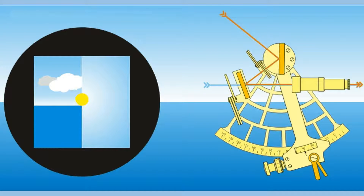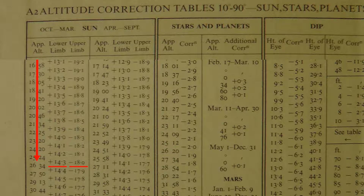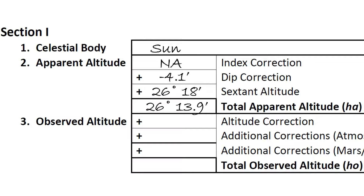When using a sextant on the sun or moon, you either place the top or bottom of the celestial body on the horizon. The bottom is called the lower limb, while the top is called the upper limb. Let's assume that we measured the lower limb, so we note that we add 14.3 arc minutes for our altitude correction.